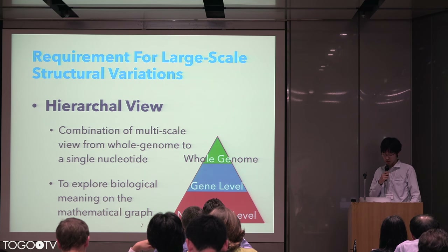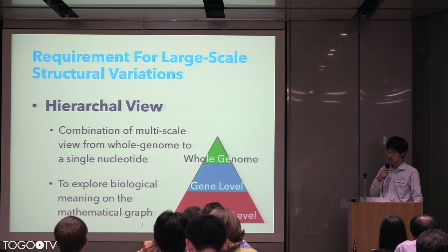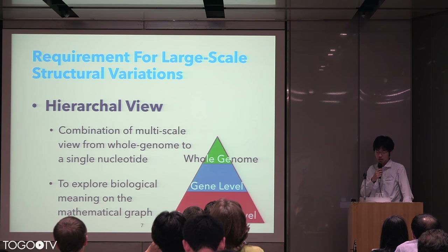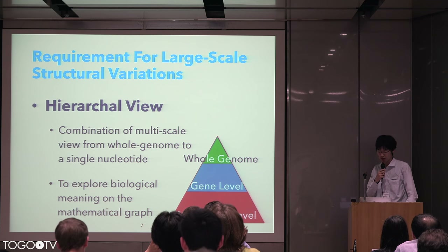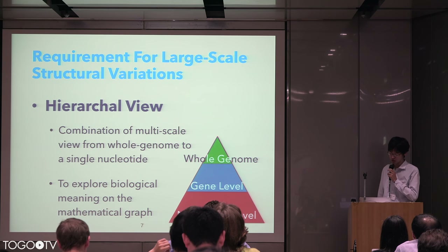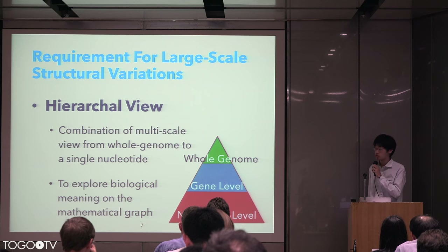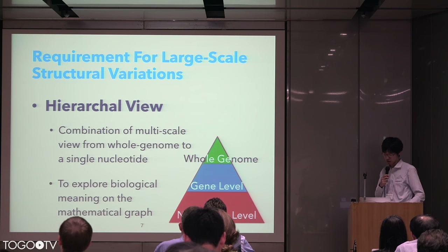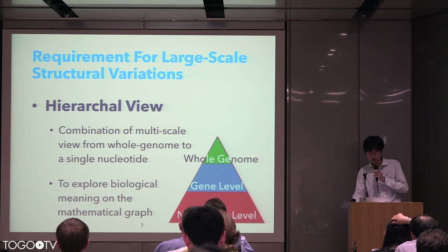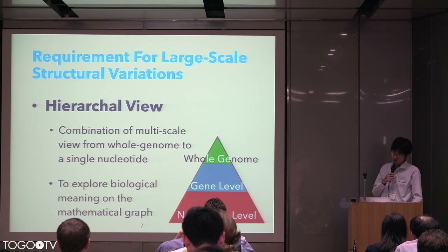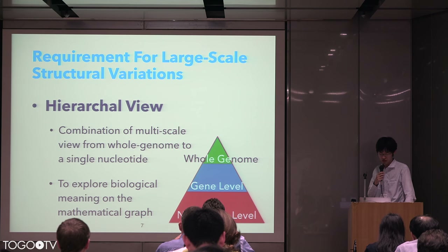While genome graphs have been considered promising, especially in human variation analysis, the analysis is deeply linked to the visualization of genome graphs. In order to reduce the problem that structural variations are difficult to understand, I propose a hierarchical view as a means of visualization. Since there are suitable views depending on the scale, such as whole genome, gene level, and nucleotide level, a combination of multi-scale views is required. It is useful to explore biological annotations, such as variations or genes, on the mathematical graph, since annotations on the reference genome are necessary for revealing biological meaning, such as fusion genes.